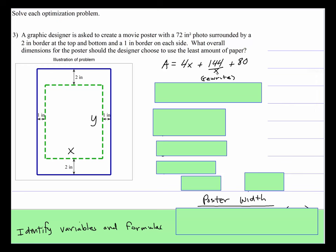But let's go ahead and rewrite this so we don't have an x in the denominator. So remember, laws of exponents. If you have x to the negative first, that means the same as 1 over x. So that's what we're going to do. We're going to rewrite that.